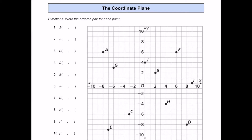In this video let's talk about the coordinate plane. We're going to start by looking at ordered pairs. These ordered pairs are basically just points that have coordinates in x comma y. X is left and right, y is going to be up and down.